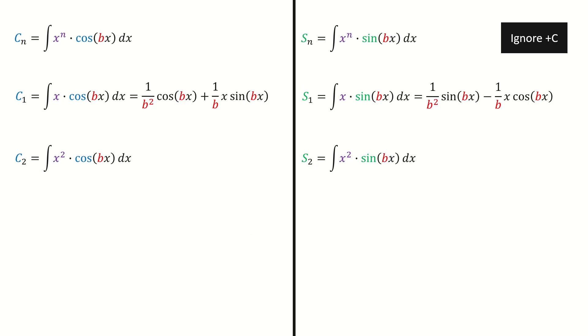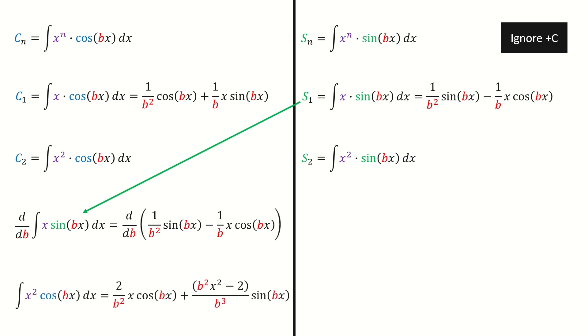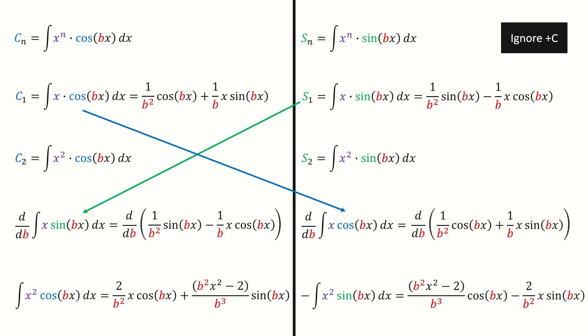Now let's solve for c2. Here I copy the result from s1. Then we take the derivative on both sides. So we are done for c2. Next, for s2, we use the result from c2. Then we take the derivative on both sides. After multiplying minus 1 on both sides, we are done for s2.